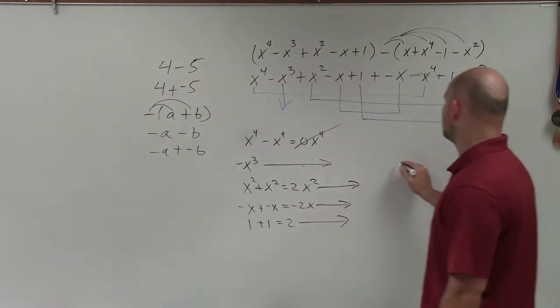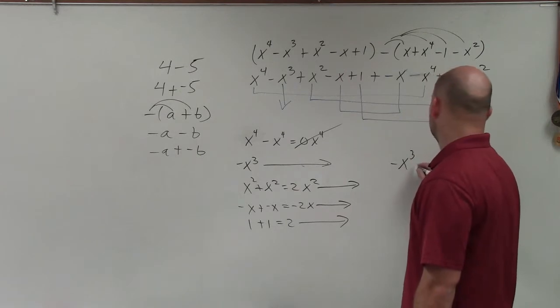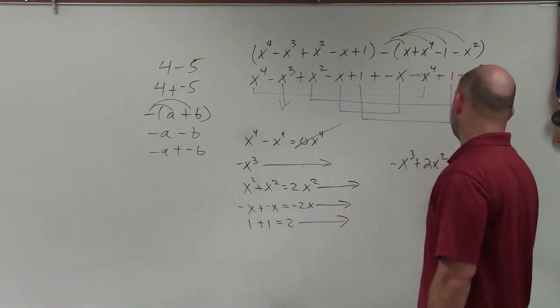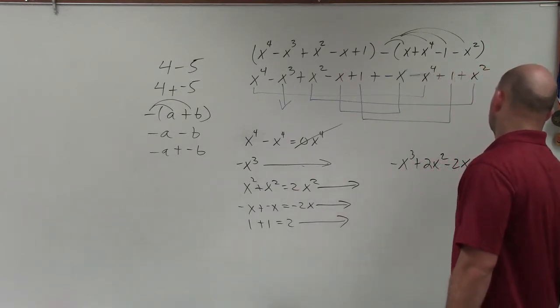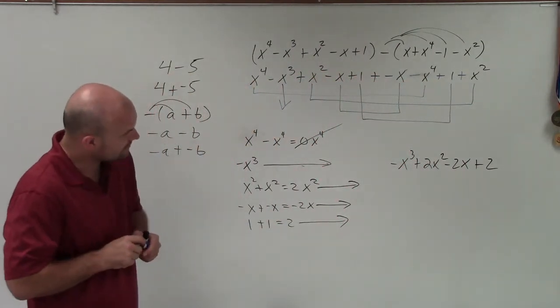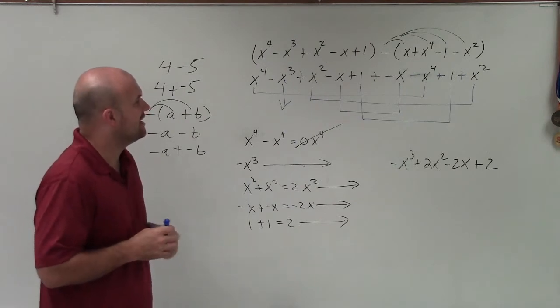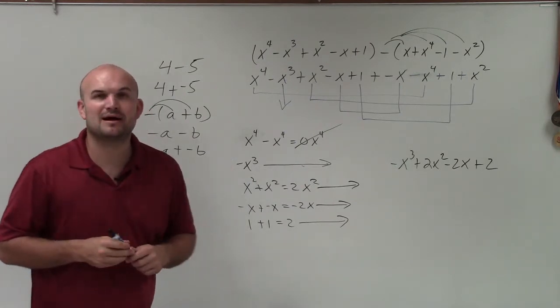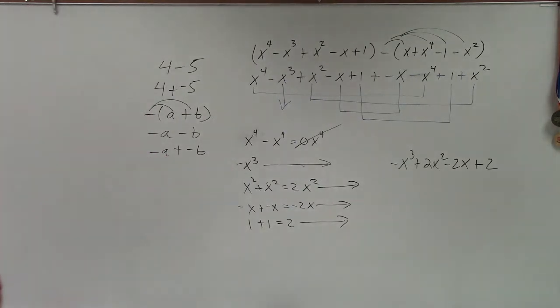Therefore, all the arrows that I have answers for are negative x cubed plus 2x squared minus 2x plus 2. So there you go, ladies and gentlemen. That is how you go ahead and subtract two polynomials. Thanks. Or determine the difference of two polynomials, or subtract one polynomial from another.